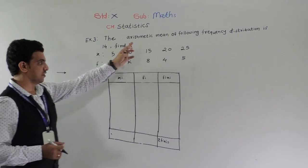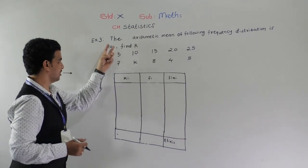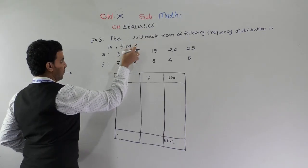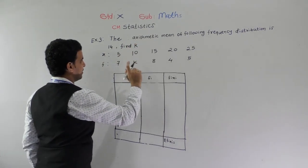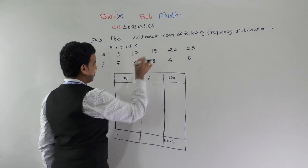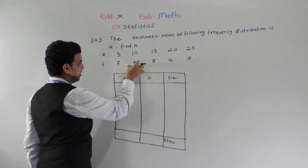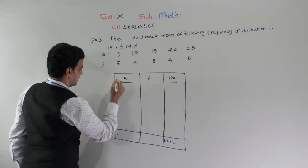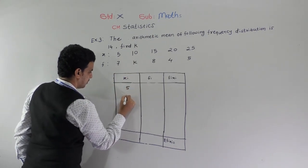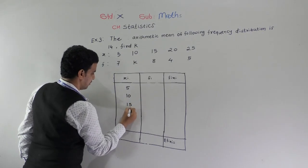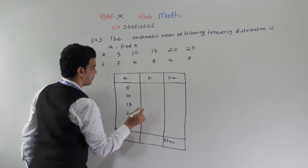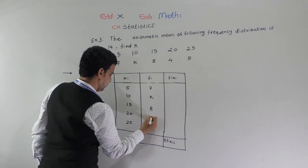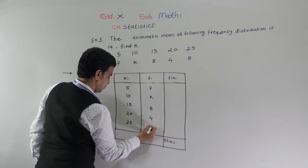Next example: the arithmetic mean of the following frequency distribution is 14. So here the mean is given and we have to find the value of k. In the previous example the unknown variable was in xi; here the unknown variable is in fi. Same procedure applies. Xi is given as 5, 10, 15, 20, 25. Fi is given as 7, k, 8, 4, 5.